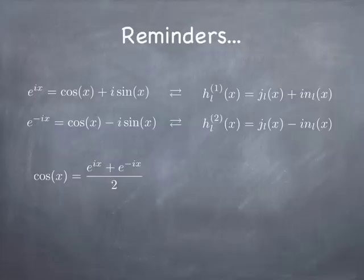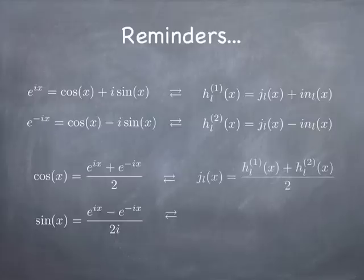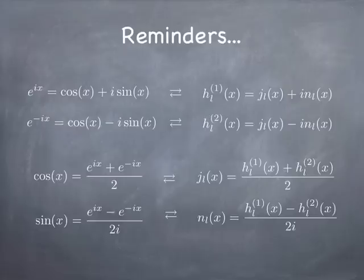If you believe in the Euler relation, you can reverse it and write cosine as a superposition of e to the ix and e to the minus ix, and you can write sine similarly. Somewhat analogously, you can write the Bessel function of the first kind, the j, as a superposition of the first and second type of Hankel function, and the n's as a superposition of Hankel functions. Bear this relationship in mind when looking at these expressions to understand what's going on.